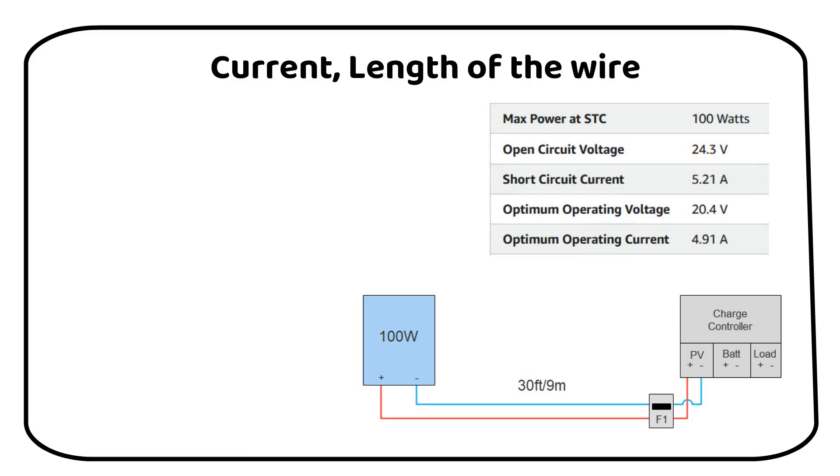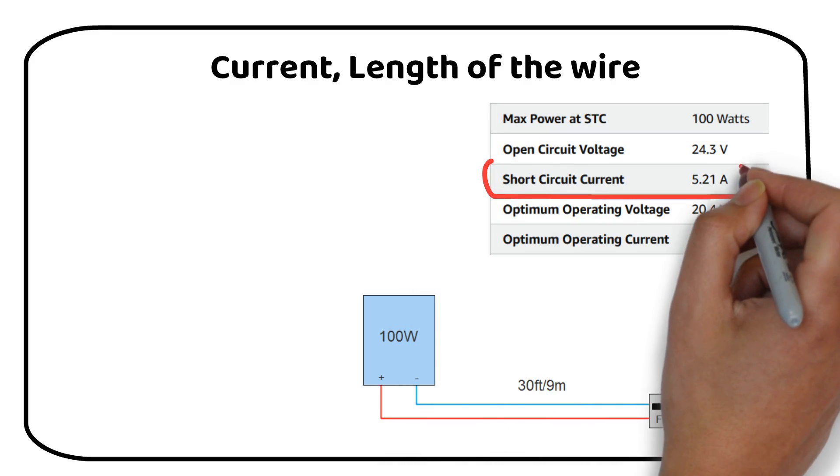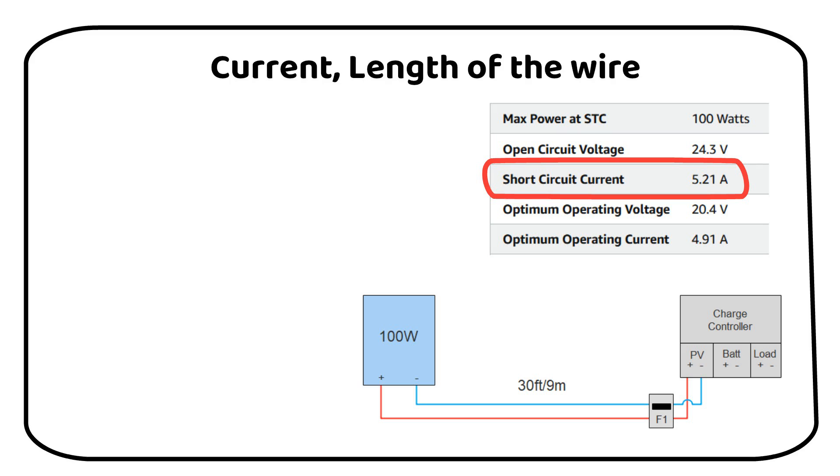The first step is to calculate the maximum current. We look at the panel's short circuit current, or ISC. For this panel, it's 5.21 amps. We apply a safety factor of 1.56 to account for outdoor conditions. This factor is derived from multiplying the standard 125% safety margin by another 125%.